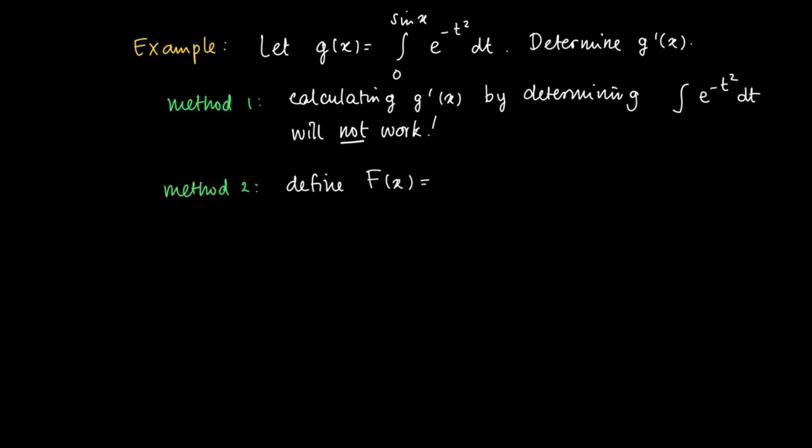But method 2 helps us out here. So define F(x) as the primitive from 0 to x of e to the power minus t squared. Since e to the power minus t squared is a continuous function, this actually defines a primitive by virtue of the main theorem of calculus part 1.